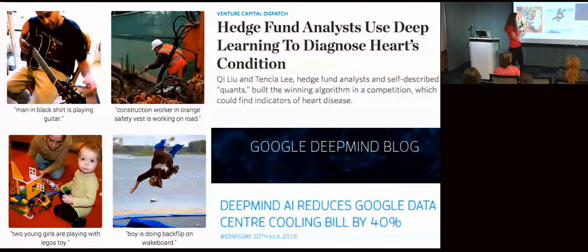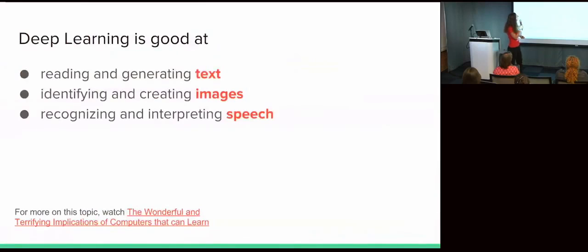So all these applications I've mentioned are powered by the same class of algorithms: deep learning. This is not an exhaustive list, but deep learning is good at reading and generating text, identifying and creating images, and recognizing and interpreting speech.